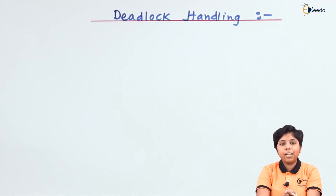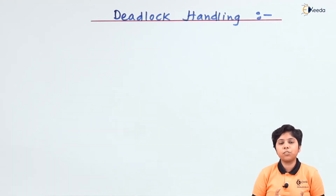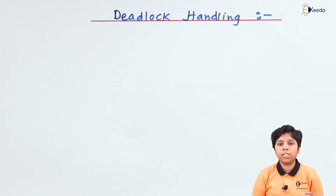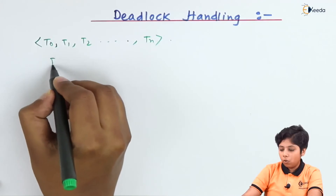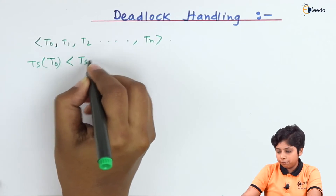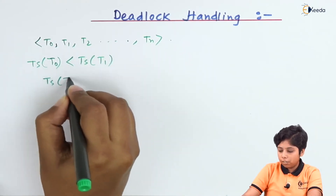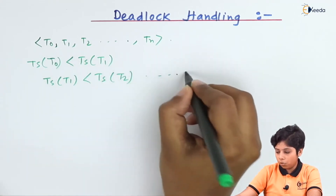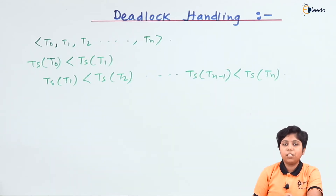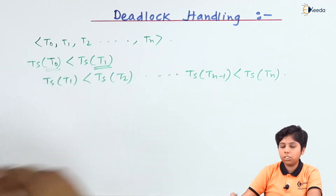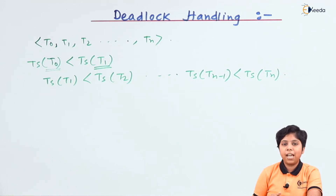When we say that there is a deadlock, we are confirming that there is a set of transactions that waits for another set of transactions to complete. Every transaction in that set is waiting for any other transaction from that set to commit its operation. Suppose we have a set of transactions from T0 to Tn, where T0 precedes T1, T1 precedes T2, and so on, with Tn-1 preceding Tn. If T0 is waiting for T1, and T1 waits for T2, and Tn-1 waits for Tn, then the system is in deadlock.